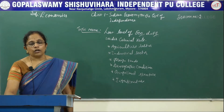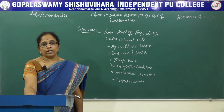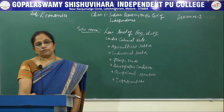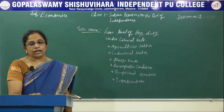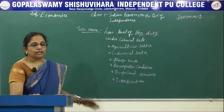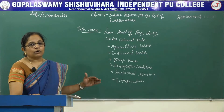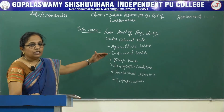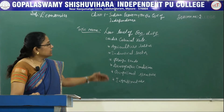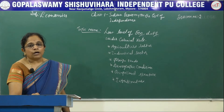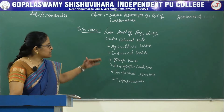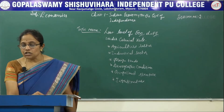Yesterday you all learnt that colonial rule is nothing but the Britain people from England and other parts of Europe came to India and established their colonies in different parts of our country, and therefore it is called as the colonial rule. So yesterday we were learning that there were lots of failures in the economic development due to the policies of the colonial government. Now let us see how this was done by these British people.